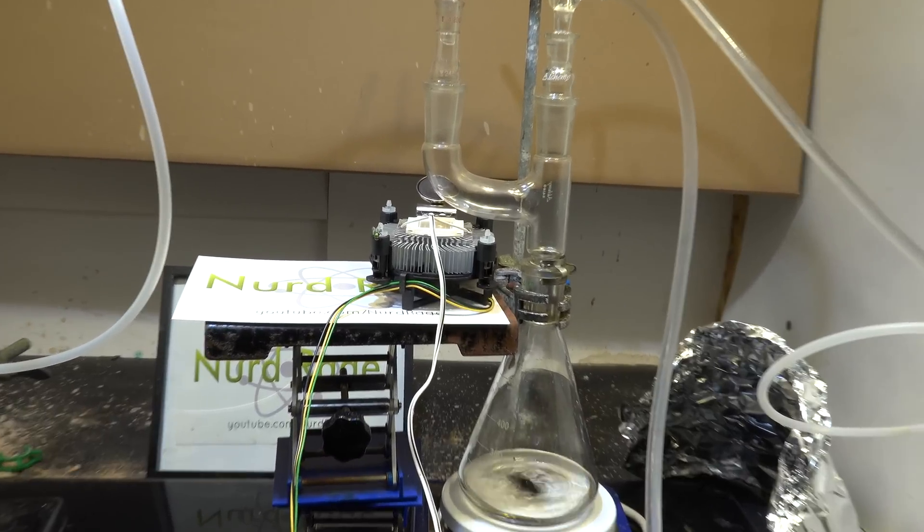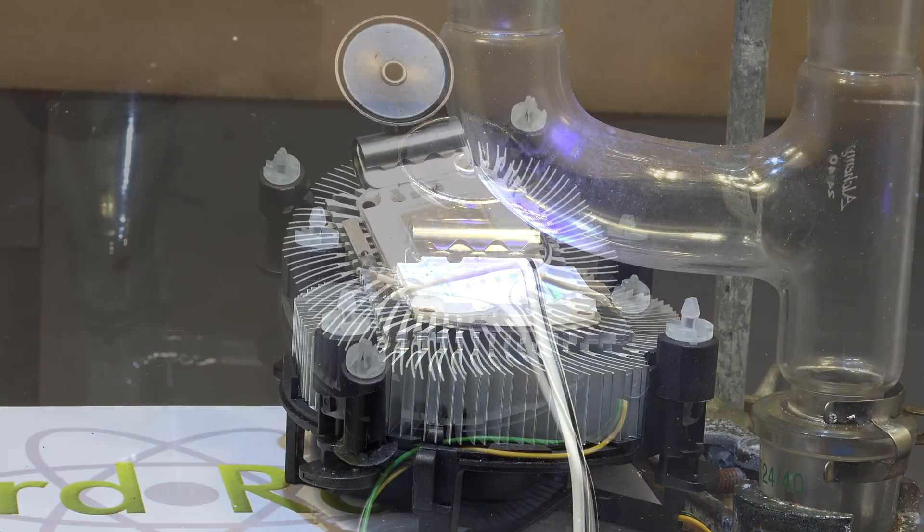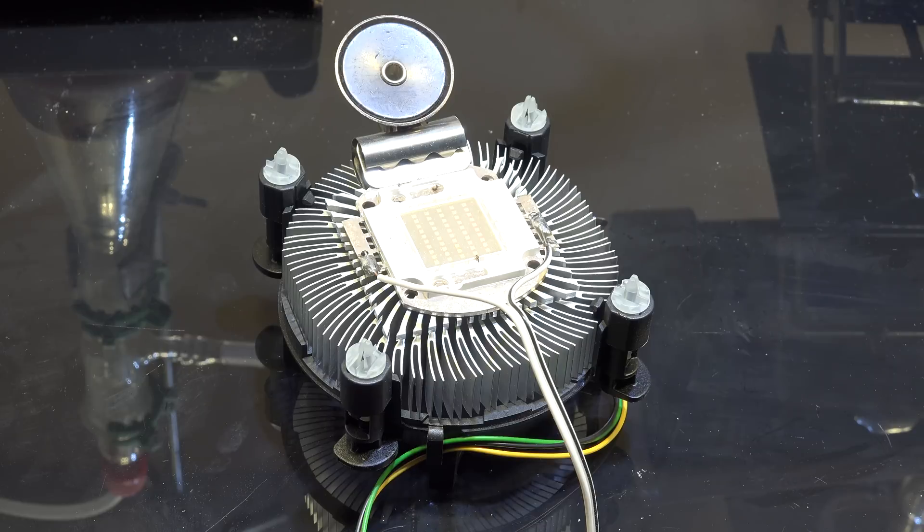Once the two gases are mixed, the fun part happens over here when it passes over the ultraviolet light emitting diode chip, or UV LED chip. These LEDs are pretty easy to get online and I'm using a 50 watt version that I've clipped to this spare Intel CPU heatsink. It's being powered by a power supply off camera. The wavelength is about 400 nanometers.